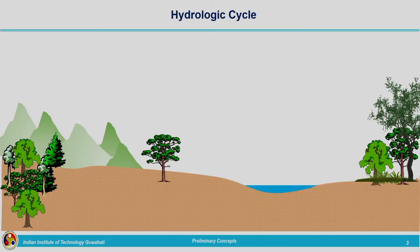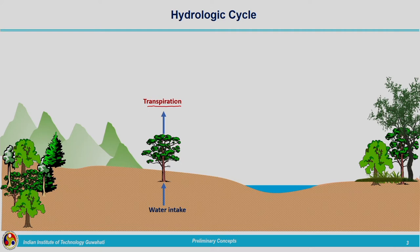Now let us start with the very basic concept of the water cycle or hydrologic cycle, and understand the different processes which come under it. Plants absorb water from the soil; it is transported through the stems and escapes out of the tiny pores present in the leaves into the atmosphere. This process is termed as transpiration — the process by which water is lost to the atmosphere through plant leaves.